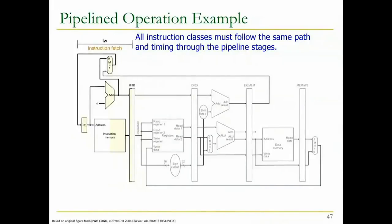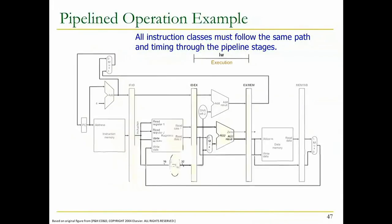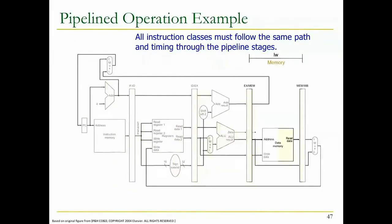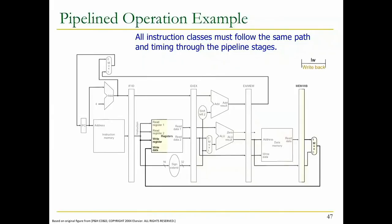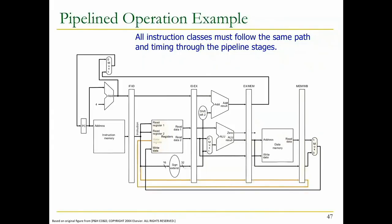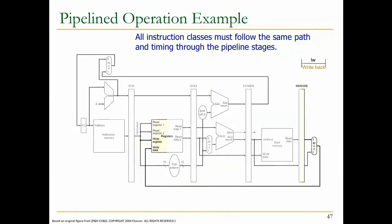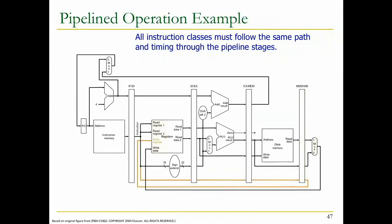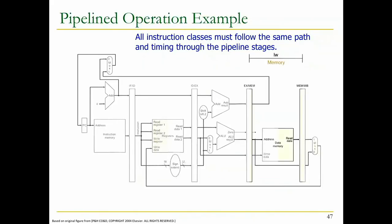All instruction classes must follow the same path and timing through the pipeline stages. Take a load word as an example: you fetch it, decode it, do address generation, access memory, then write it back. Load word is good because it uses all of the stages. When you write back you need to use the correct register number - it really needs to come from the decode stage. You should have kept the destination register number and propagated it so that when load word reaches write back, you use that destination register number.